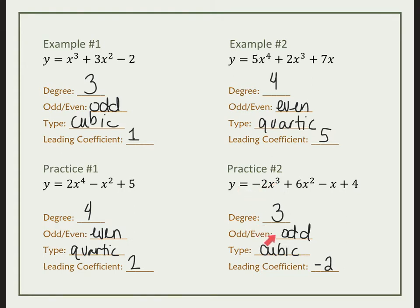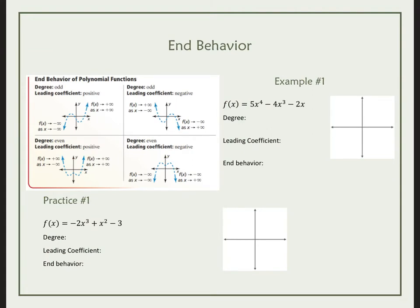So why is odd or even important, and what's the purpose of the leading coefficient? It's going to help us with end behavior. End behavior is where are my endpoints going. Each graph has two parts of end behavior — the left side and the right side. On the left side, x is always approaching negative infinity. On the right side, x is always approaching positive infinity. That arrow reads 'approaches.'